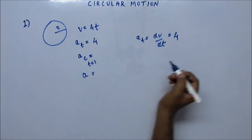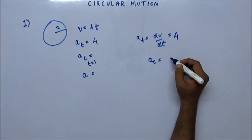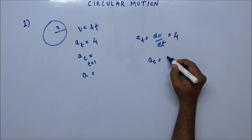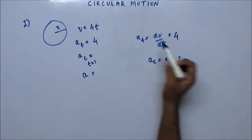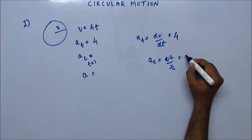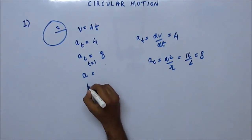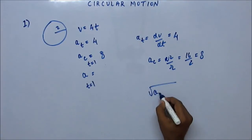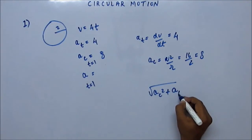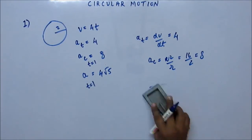Now I'm asking for centripetal acceleration at t = 1 second. Centripetal acceleration is v² / r. Velocity at t = 1 from the relation is 4, so it's 16 / 2 = 8 units. Total acceleration at t = 1 is the square root of centripetal acceleration squared plus tangential acceleration squared, because they are perpendicular to each other. That comes out as 4√5 units.